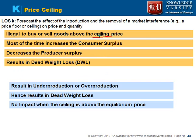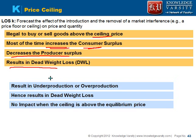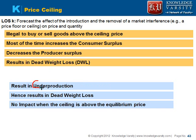If you want to sell above the ceiling price, you are not allowed to. Most of the time it increases consumer surplus because consumers are not paying the equilibrium price — they are paying lower prices because of the ceiling that has been imposed. But it does result in a decrease of producer surplus and moreover it results in dead weight loss. The price ceiling would result in under-production because people would not produce the item — they feel they are selling at a lower price than it should be, so they decrease the quantity.